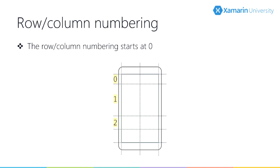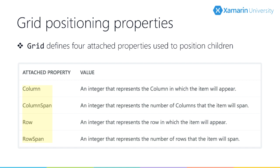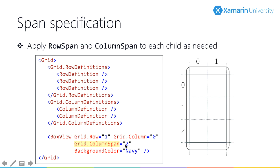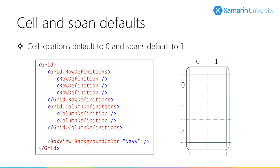Row and column numbers start at zero. To position a child within the grid, use attached properties: Row and Column for positioning, RowSpan and ColumnSpan for sizing. For example, Grid.Row=1 and Grid.Column=0 places the child in that cell. ColumnSpan=2 makes it span two columns. Row and Column default to zero, and both spans default to one — so a child with no attached properties set goes into row zero, column zero, occupying a single cell.